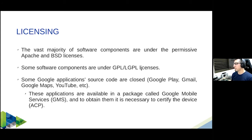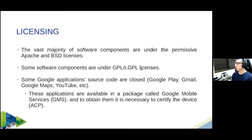There are also differences in licensing. Google doesn't like GPL and its variations. The vast majority of software components in Android use permissive licenses like Apache and BSD. There are some GPL licenses but very few compared to Apache and BSD. Of course there are closed components in Android, especially Google applications — you don't have the source code for those. If you want to add Google Play or Google Maps to your device, you have to certify your device through a process to be able to call it an Android-powered device.